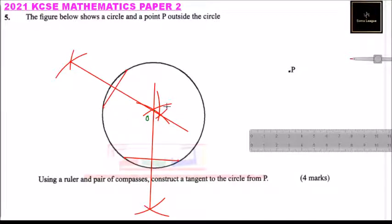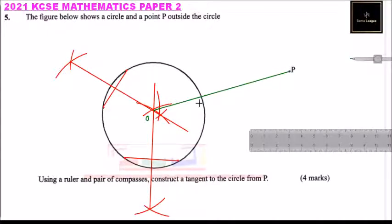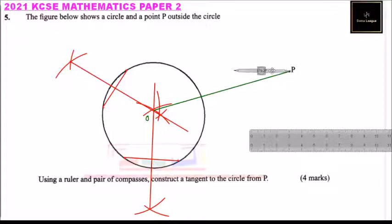You use a ruler to join P and O. This is where we have our O and P — we join those two points. Then we are supposed to get the tangent by bisecting this line. So you place your compass there and make two arcs, just like we bisected the other two lines.